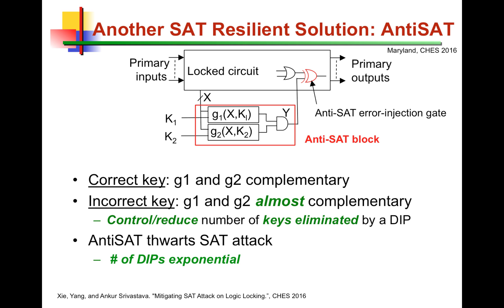The magnitude of this error can be controlled by adjusting the onset of these complementary blocks inside the anti-SAT block. As long as the magnitude of this error is small, anti-SAT makes sure that the DIPs that the SAT attack produces are limited in effectiveness in terms of their distinguishing abilities.